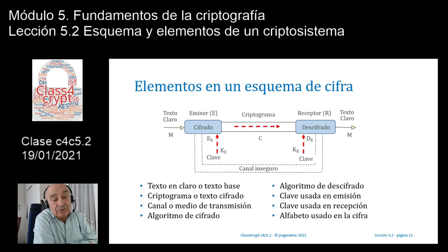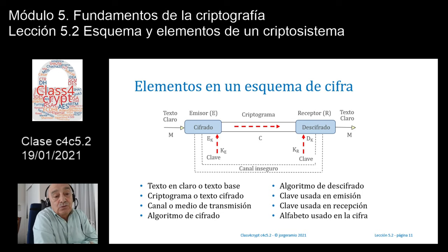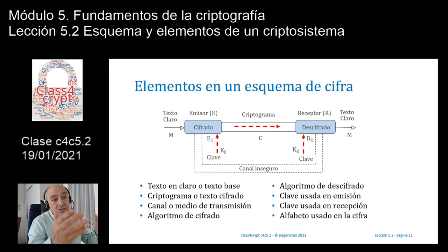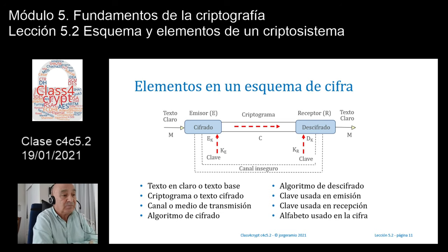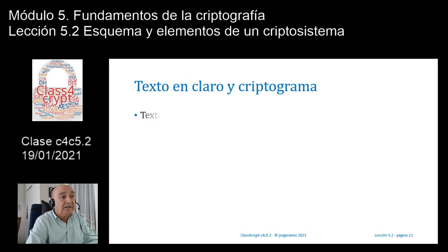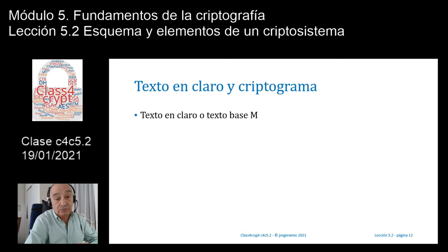El alfabeto de cifra es el conjunto de símbolos con que se representa el texto en claro: puede ser solo letras mayúsculas, como en la criptografía clásica, o el código ASCII extendido actual, donde ciframos grupos de bytes (bloques de 8 bits) que pueden tener cualquier codificación. Esto lo denominamos alfabeto usado en la cifra.